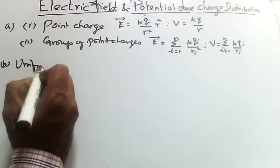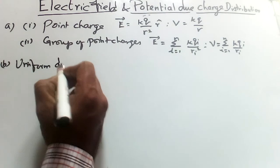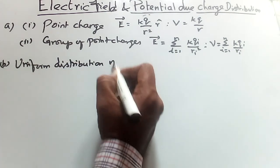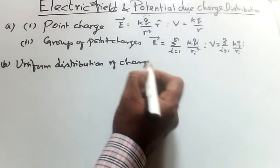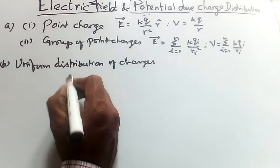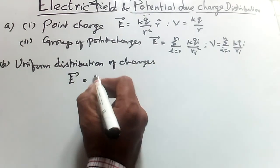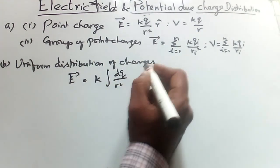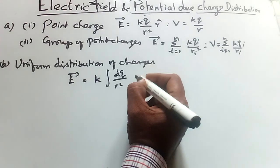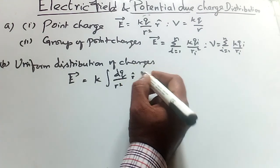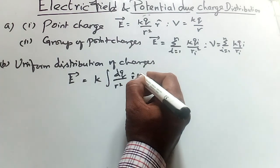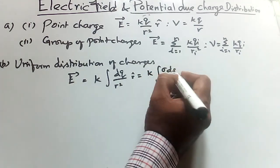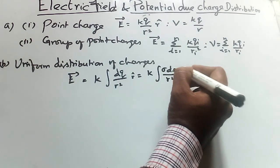For uniform distribution of charges, vector E equals K integral dq by R square R cap, equals K integral sigma ds by R square R cap.